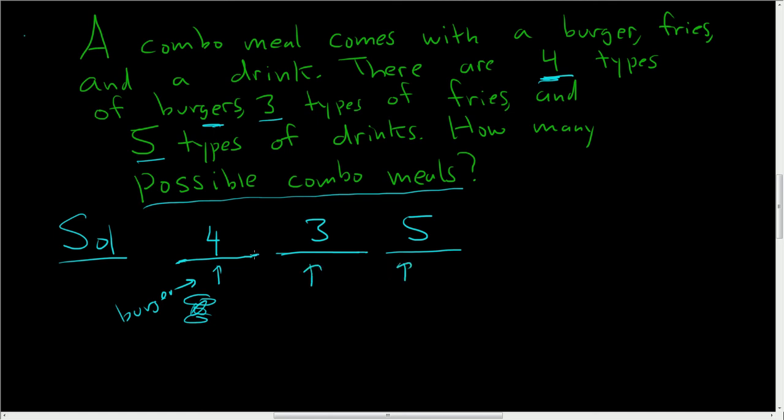So the number of ways to construct a combo meal is the product of the number of ways to perform the individual steps. So you get 4 times 3 times 5, which is 12 times 5, which is 60. So there are 60 possible combo meals. That is incredible.